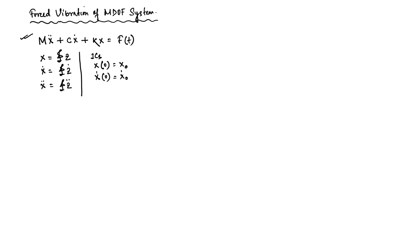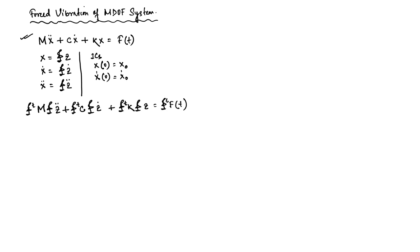Once we have that situation, we first convert the equation into modal coordinates using the transformation x equals phi z, and then we use that transformation in the matrix equation. We multiply both sides by phi-transpose, which helps us decouple the equation. This gives us the decoupled mass matrix M_d, the decoupled damping matrix C_d (under certain special conditions), and the decoupled stiffness matrix K_d.